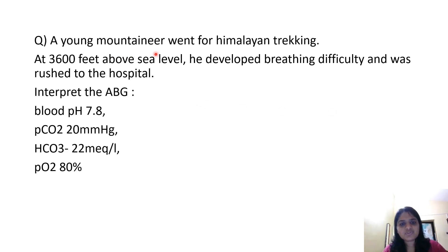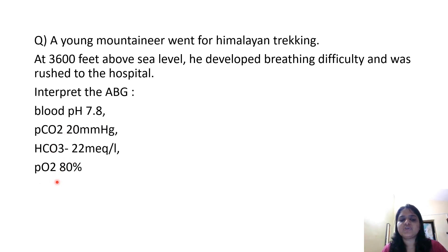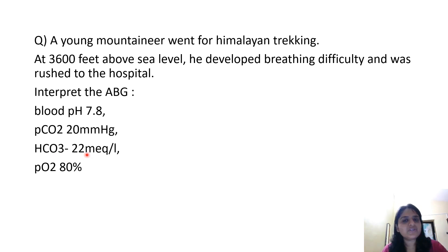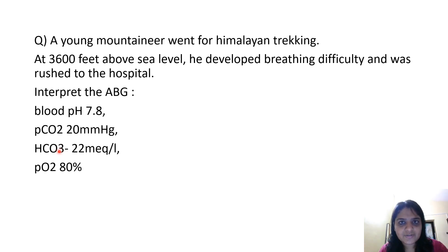Moving on to the next question. A young mountaineer went for Himalayan trekking. At 3,600 feet above sea level, he developed breathing difficulty and was rushed to the hospital. Interpret the ABG: blood pH 7.8, PCO2 20, bicarbonate 22, partial pressure of oxygen 80. The pH is 7.8, which means alkalosis. PCO2 is 20 — decreased. Bicarbonate is 22, which is within the normal range of 22 to 26. So the respiratory component has decreased and the metabolic component is normal — it is respiratory alkalosis. The partial pressure of oxygen is also reduced, likely because of high altitude.